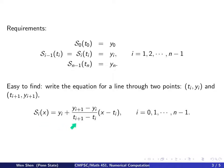Using point-slope form, the slope is (y_{i+1} - y_i)/(t_{i+1} - t_i), times (x - t_i), plus y_i. This holds for i = 0, 1, ..., n-1.